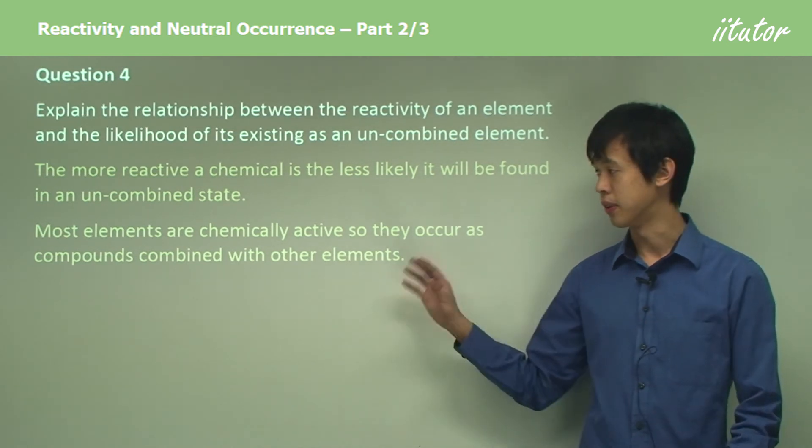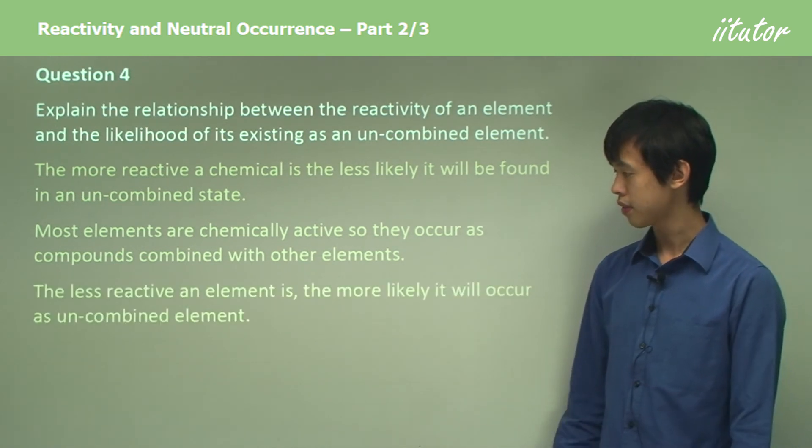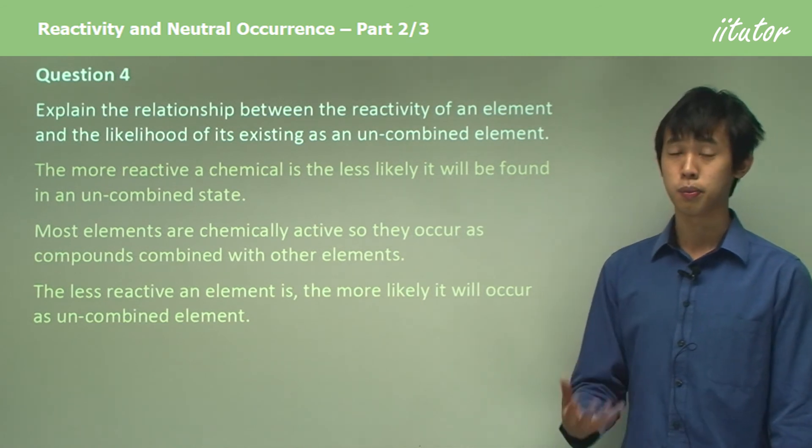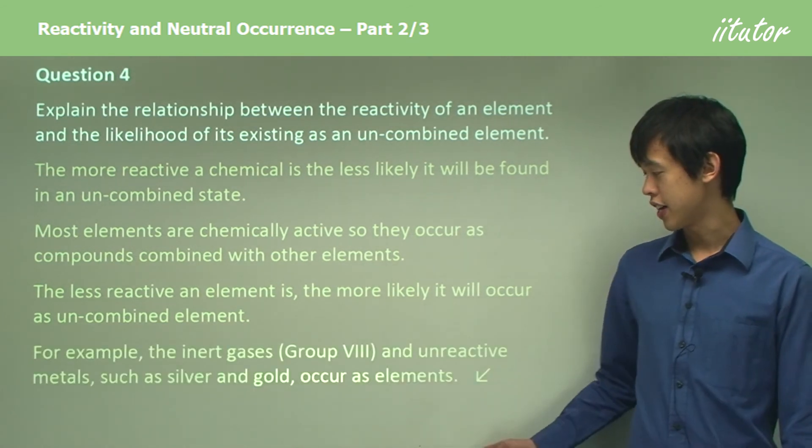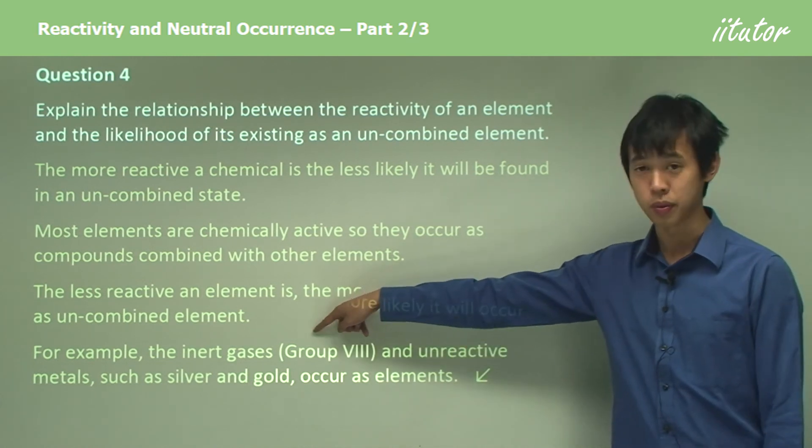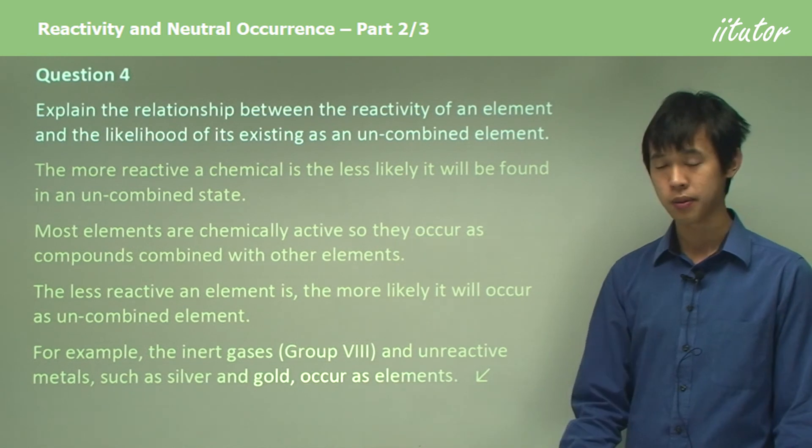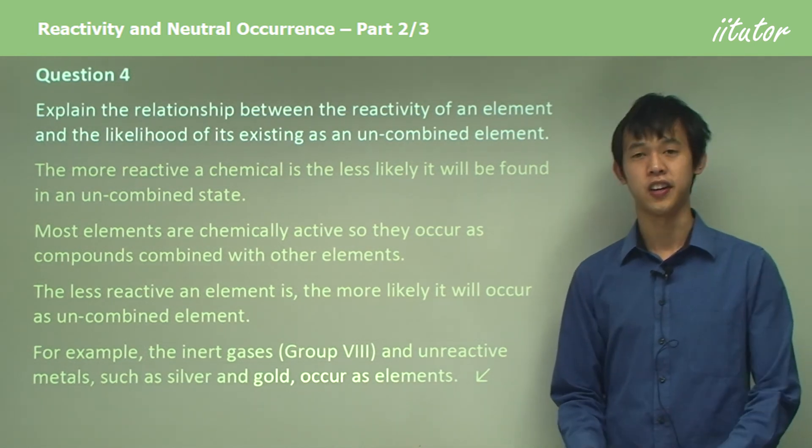The less reactive an element, the more likely we are to find it as an uncombined element. For example, the inert gases, or all the members of Group VIII, and unreactive metals like silver, gold, or platinum occur as elements in the earth's crust. So we know that they're very, very unreactive.